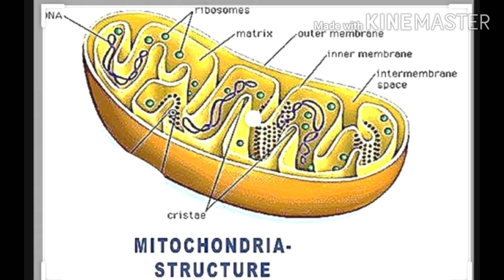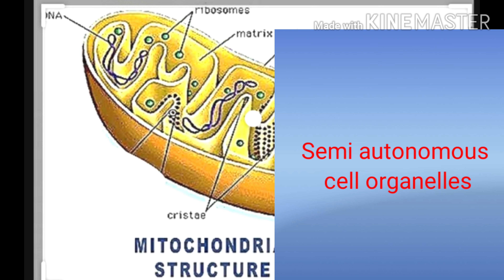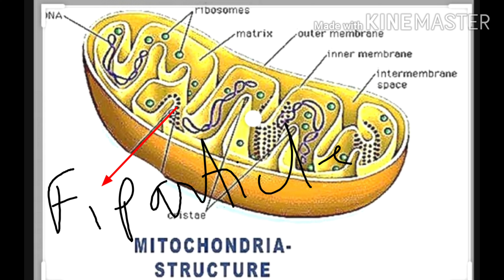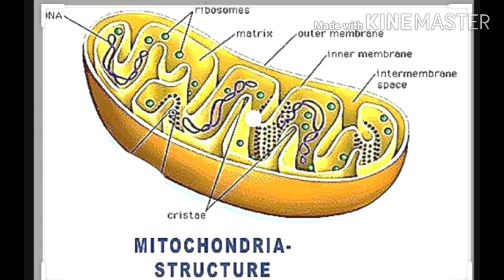Because it can synthesize its own proteins, mitochondria is called a semi-autonomous cell organelle — and like mitochondria, chloroplasts are also semi-autonomous cell organelles. Inside the mitochondria, on the cristae, F1 particles are present and they are the site for cellular respiration. Various enzymes present inside the mitochondria are essential for cellular respiration.